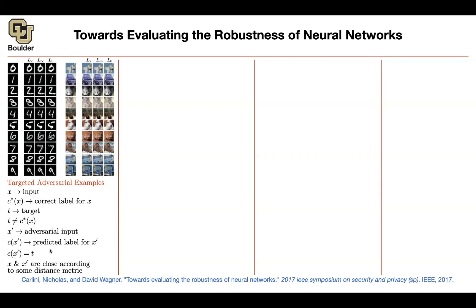We want x and x' to be close according to some metric—L2 distance, L-infinity distance, L0 distance, distance on the sphere, etc. For untargeted, you don't have any target; you just want C(x') to be different from the correct label for x. So as soon as you classify a one as a zero, that's a success. But in the case of a targeted adversarial example, you want your one to be classified as a five—five is your target.